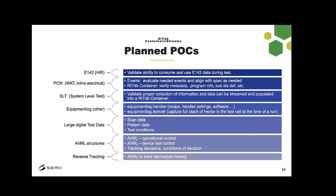Today you have portions of test cell information within the data log stream — some load board basics and detailed tester info — but not the rest of what's in the test cell: thermal streams, lasers, customer control software versions. None of that is in the data log and it really doesn't belong there. You should be able to collect it and have the data log reference it, rather than clogging the data log with environmental information.